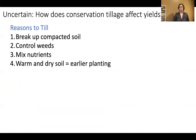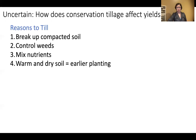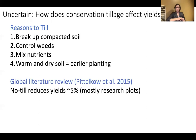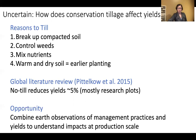It's still uncertain how tillage affects yields. Tillage can break up compacted soil, control weeds, mix nutrients, and warm and dry the soil so you can plant earlier, which generally leads to higher yields. A global literature review found that no-till can actually reduce yields about five percent, especially initially. But a lot of this was done on research plots, and there's reason to think that doesn't necessarily capture real, production-scale tillage fields. This leaves an opportunity to combine earth observations of management practices and yields to understand these impacts at production scale.